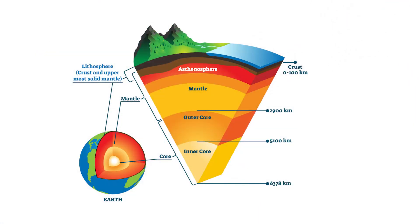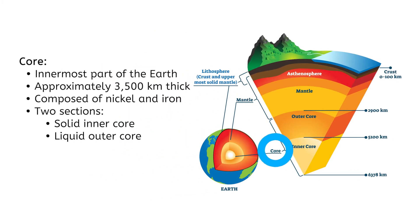Finally, we reach the innermost part of the earth, the core. Since scientists are unable to study the core directly, they use data collected during seismic activity to study the composition of the approximately 3,500 kilometer thick core. The core is made of two sections: the solid innermost section, made of rocks of nickel and iron, and a liquid outer core, made of liquid nickel and iron.